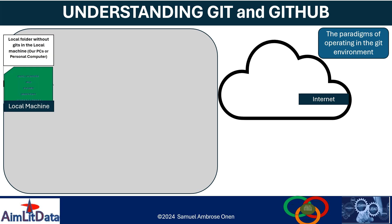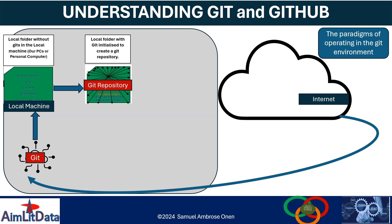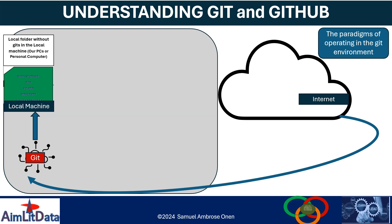When you don't have Git on your local machine, just go to the internet and grab it from the Git provider's website, then install it to your local machine. Once you have Git installed, you can do a lot, but you can't just do it anyhow — you need to create what is called Git repositories. Git will just sit there if you don't create repositories.